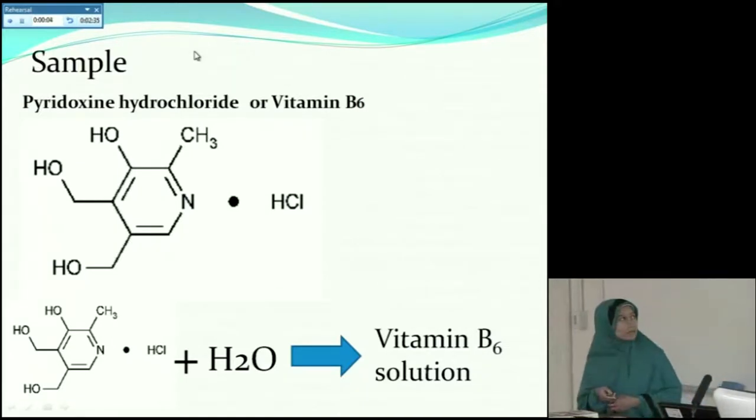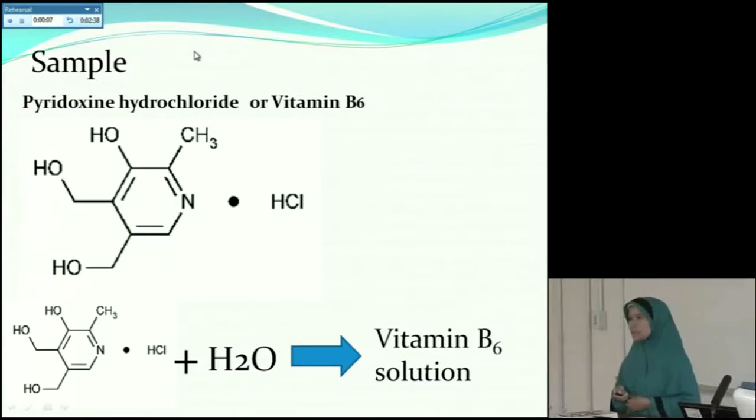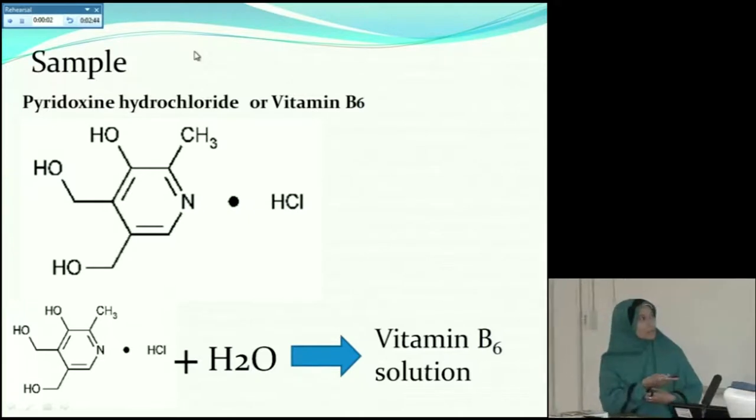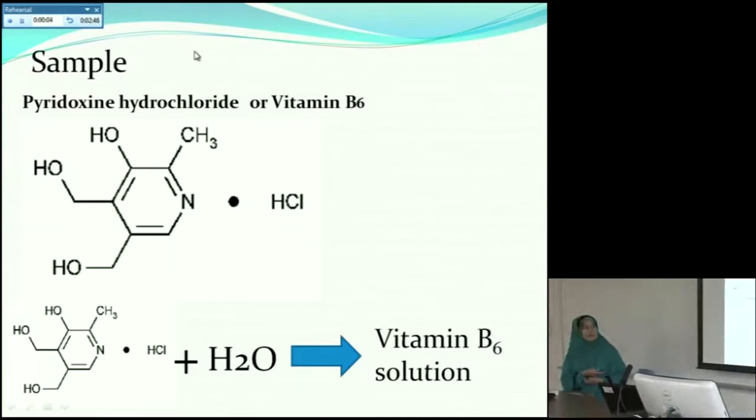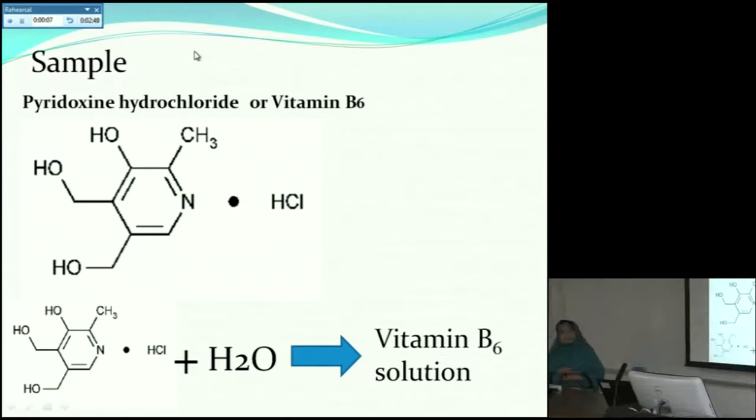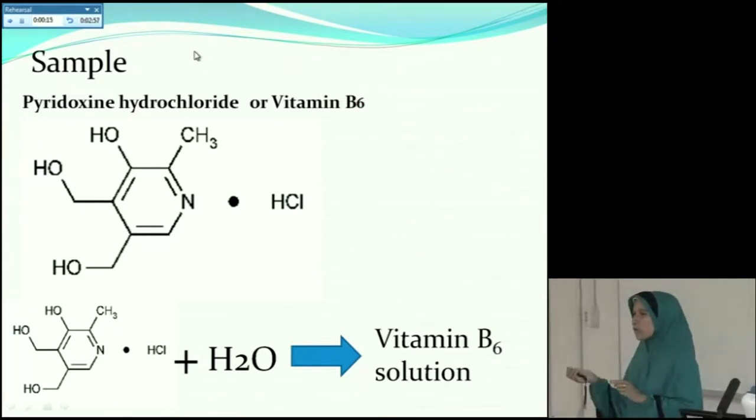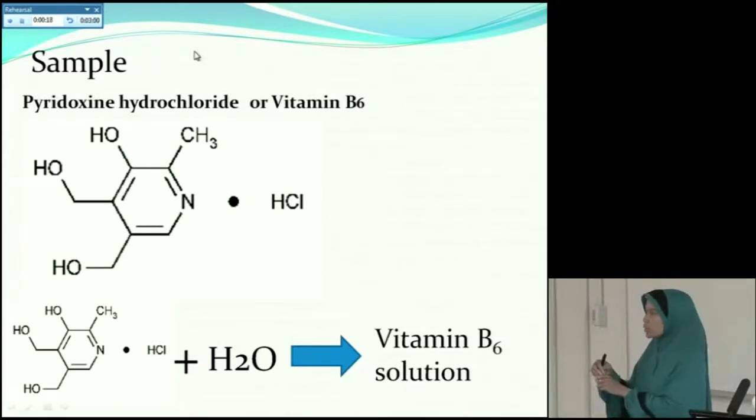Next is the material and method in my experiment. This is the chemical structure of Vitamin B6 or pyridoxine hydrochloride. I have measured 21 samples of Vitamin B6 solution including water. In this process, I dissolve the Vitamin B6 powder into distilled water, soaking it until all of the Vitamin B6 powder dissolves completely.